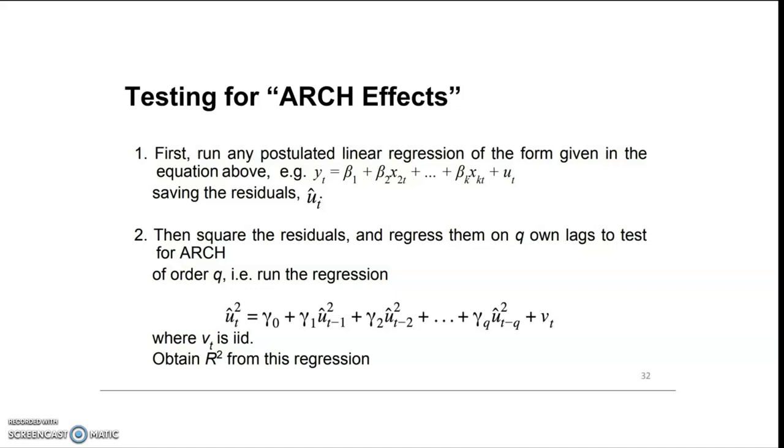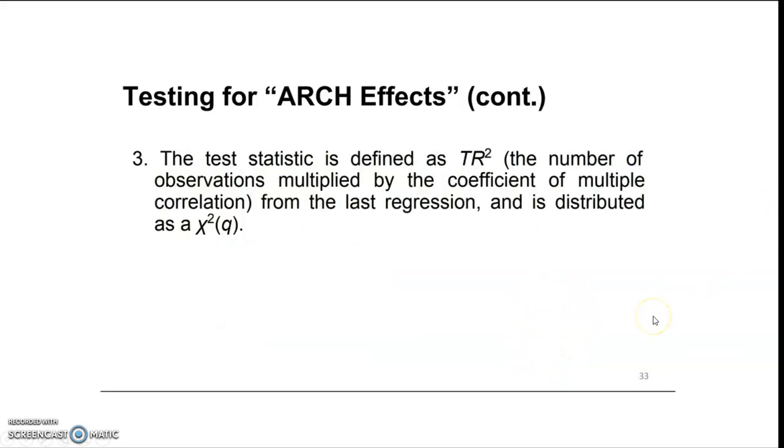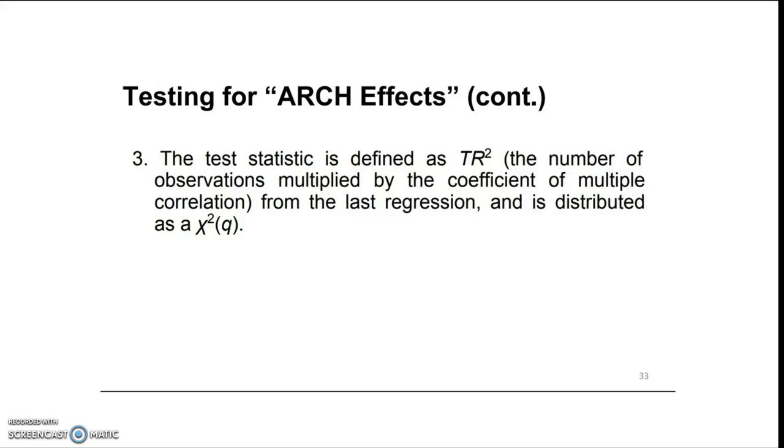Then we will obtain the R² from this regression. The test statistic is defined as T·R², where the number of observations is multiplied by the coefficient of determination from the last regression, and that will be distributed as χ² with q degrees of freedom.